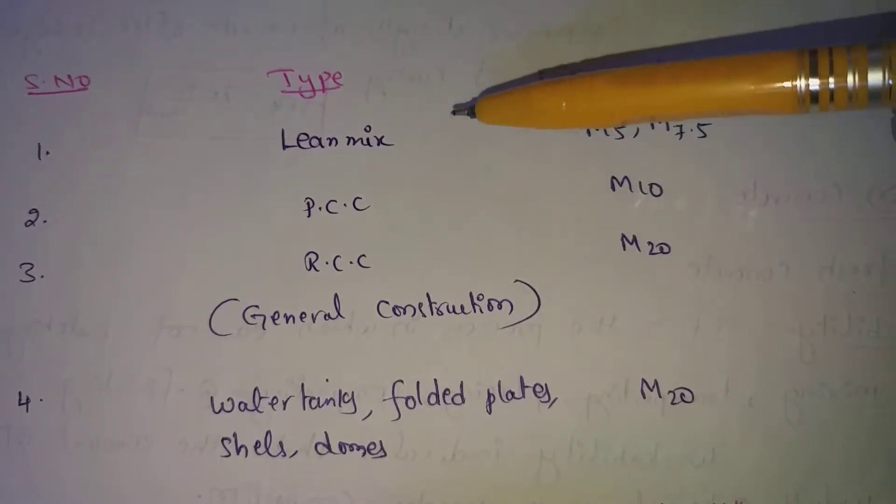Next, PCC. PCC means plain cement concrete. This is used for footing, on top of lean mix. This uses M10. So that is M10, ratio 1:3:6 mix proportion. Also, PCC M10 will be used.